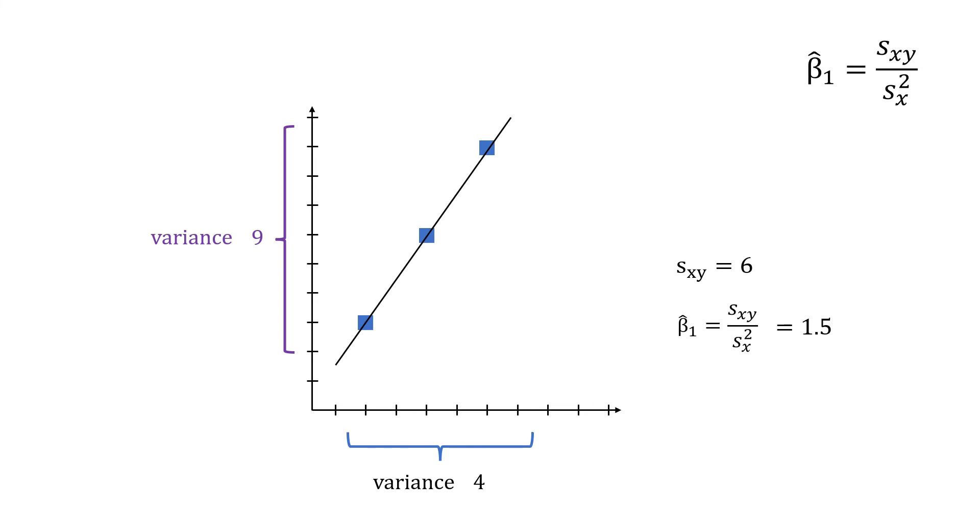Now imagine you take the rightmost point and increase the y value. This will naturally also increase the variance of y. And you see that the slope increases too. Didn't we say that the slope is not supposed to change with changes in the variance of y? You did increase the variance in y, but the driving force was actually that you also increased the covariance between x and y by moving this one point. As you would expect by the formula, increasing the covariance by 50% from 6 to 9 also led to an increase in the slope from 1.5 to 2.25.